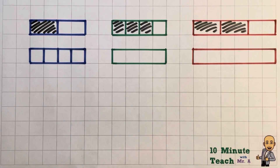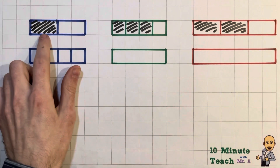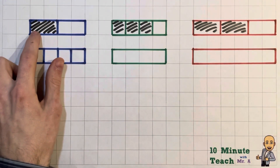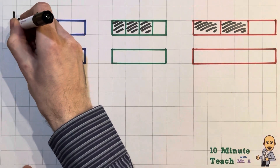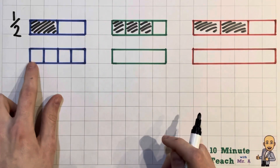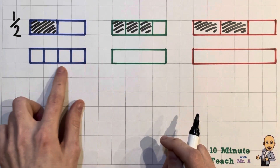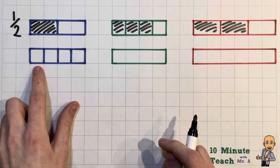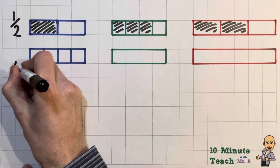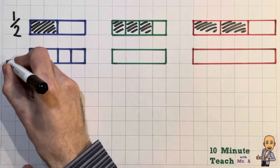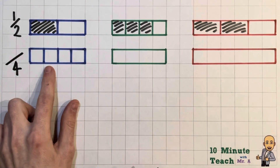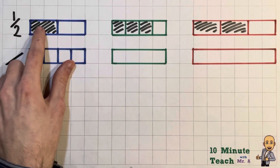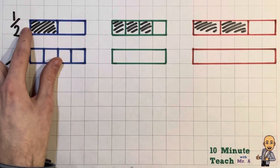So if we look at our first diagram here we've got one half shaded in. So let's write one half. Now if you look directly below I've got a bar that is split into quarters, or split into four equal pieces. So that is called the denominator. If you're not too sure what that means then check out my other video on what is a fraction and that will give you a really good explanation for it.